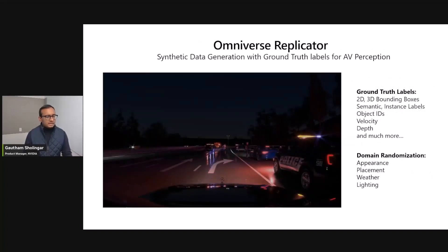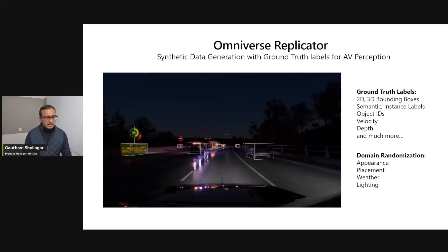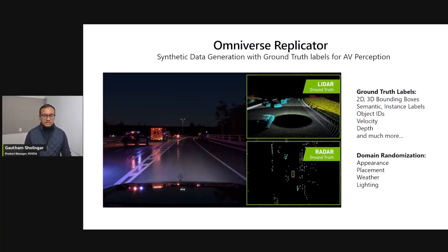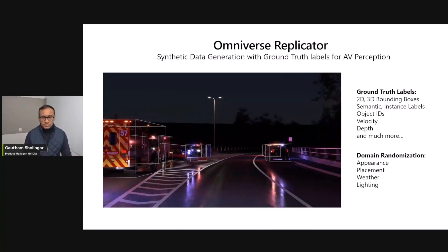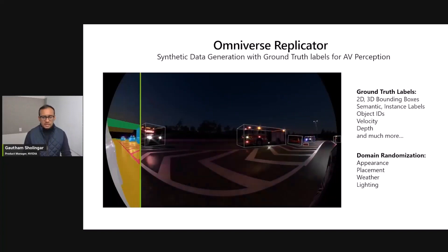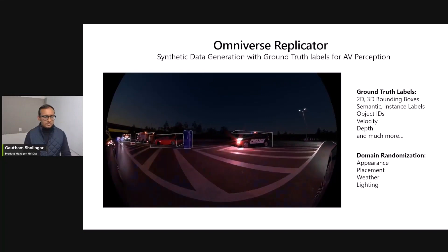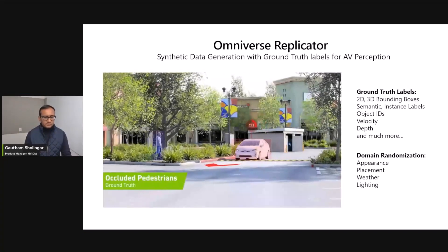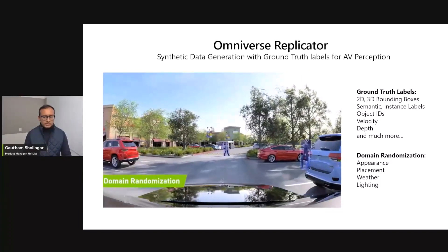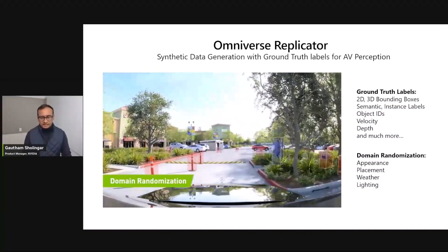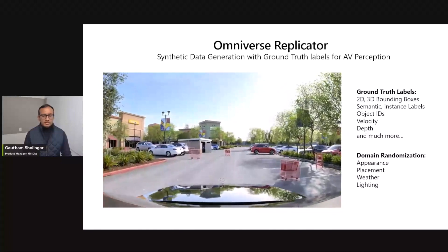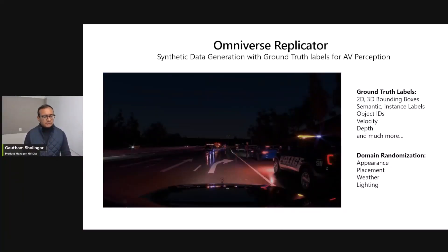One capability to highlight is synthetic data generation — that's where Omniverse Replicator comes in. Omniverse Replicator is a core extension for physically accurate synthetic data generation. This data can be used for training AI models for AV perception, but also for robotics, detecting defects, retail, manufacturing, and much more. Replicator allows you to generate rich ground truth labels, including 2D and 3D bounding boxes, semantic and instance masks, object IDs, velocity, depth, surface normals, and more. You can also customize your own ground truth and generate exactly what you need for your specific use case. Additionally, DriveSim leverages Replicator's domain randomization capabilities to vary the appearance, placement, weather, and lighting of all 3D assets in the scene to produce diverse data sets for AV perception, including camera data as well as active sensors like radar, LiDAR, and ultrasonics.